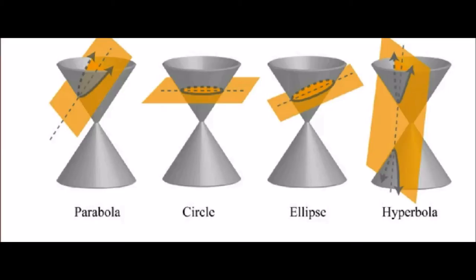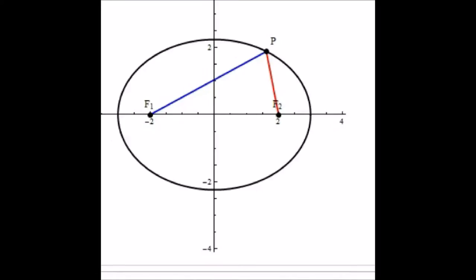I already talked a bit about conics — they're very interesting in themselves. The way the Greeks looked at them was very interesting, as slices of a cone. We have the ellipse, of which the circle could be considered an example; we have the parabola; and we have the hyperbola.